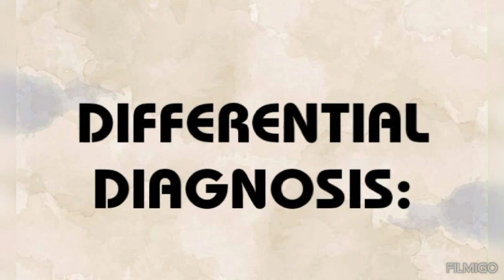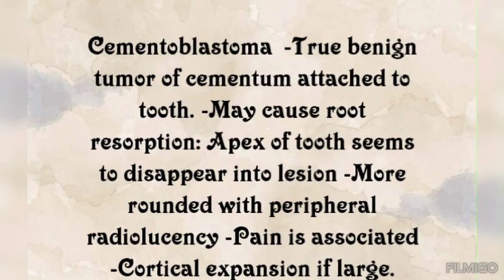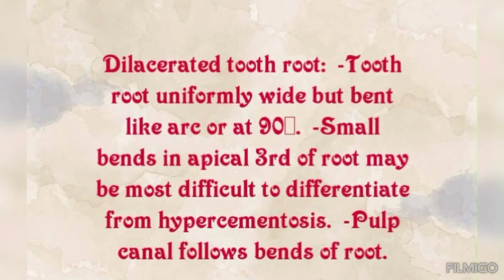The differential diagnoses for hypercementosis: first is cementoblastoma, a true benign tumor of cementum attached to the tooth. It may cause root resorption, the apex of the tooth seems to disappear into the lesion, and it presents with more rounded shape with peripheral radiolucency. Pain is associated and there is cortical expansion if it becomes large.